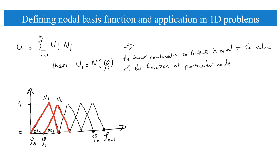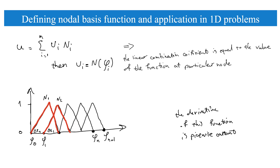Each basis function is non-zero at only two neighboring elements and is zero for all other elements. For example, basis function N_1 has values for elements delta_x_0 and delta_x_1, and is zero elsewhere. This makes computation much easier, especially when computing the derivatives of these functions, which become piecewise constant.